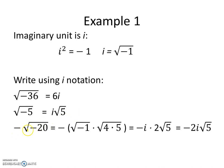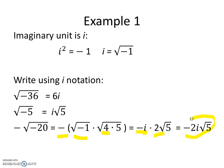Negative times the square root of negative 20 is the same as negative times the square root of negative 1 times the square root of 4 times 5. The square root of 4 is 2, and the square root of negative 1 is i, and this negative out front makes it negative i. So we take 2 times negative i and get negative 2i times radical 5, for a final answer of negative 2i radical 5.